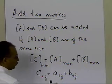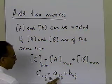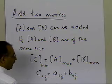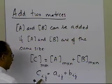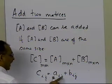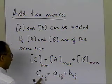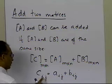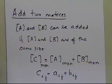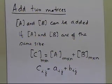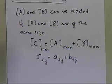So you take the ith row, jth column of A, and the ith row, jth column of B, and when you add those two elements, you will get the element of the ith row and jth column of the resulting matrix C.